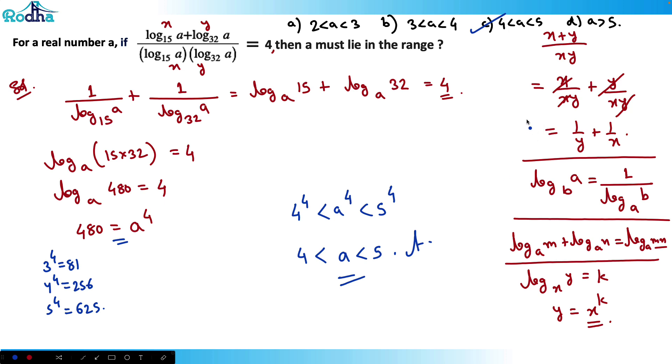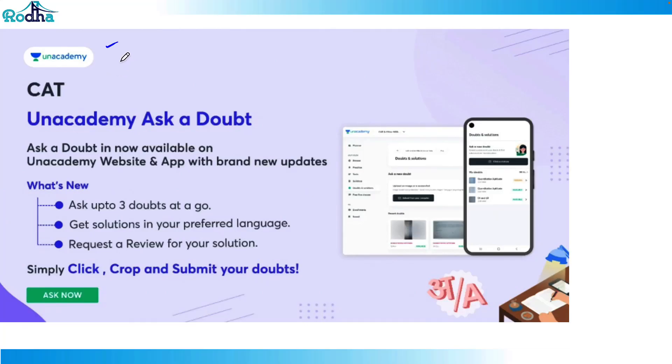Good question guys, because in this we can have some revision of two or three properties of log here. That's how they ask questions in CAT—multiple concepts in one question. So I hope all of you got this, thank you.